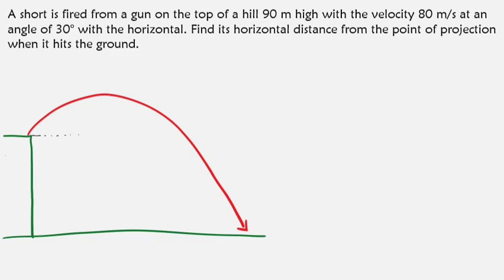We know that the angle of projection is 30°, we know that it was projected with a certain velocity, this velocity is 80 m/s. We have a height here of 90 meters, that's the vertical distance. What we're looking for is the range.